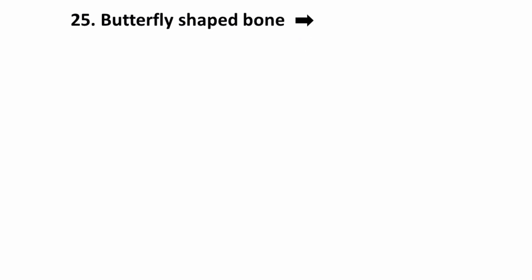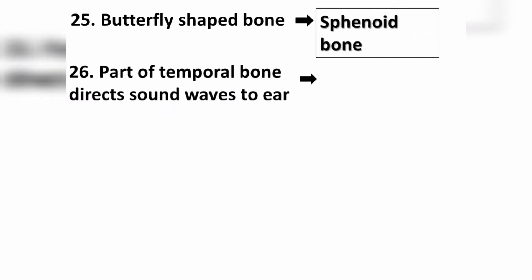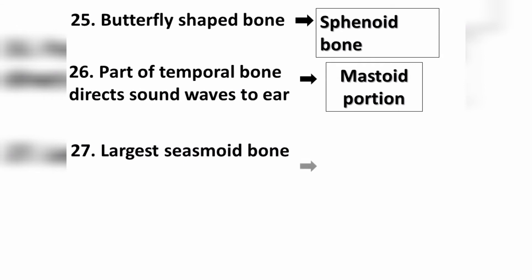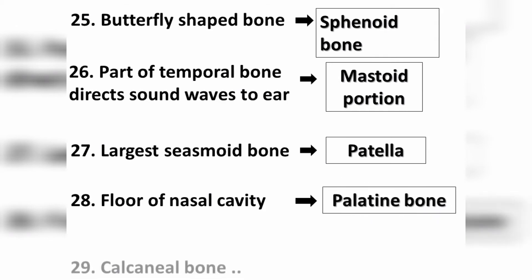Question number twenty-five: the butterfly-shaped bone is the sphenoid bone. Question number twenty-six: the part of the temporal bone that directs sound waves is the mastoid portion. Question number twenty-seven: the largest sesamoid bone in our body is called the patella. Question number twenty-eight: the floor of the nasal cavity and mouth is formed by the palatine bone.